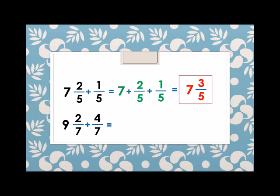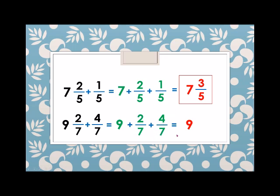Next, we rewrite nine and two sevenths plus four sevenths as nine plus two sevenths plus four sevenths. We have one whole number, so we write nine. The fractions have like denominators, so we add the numerators: two plus four is six. Therefore, nine and two sevenths plus four sevenths equals nine and six sevenths.